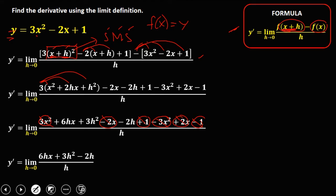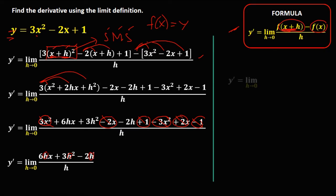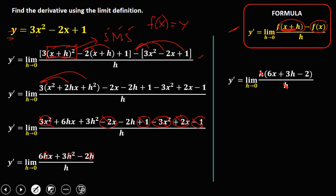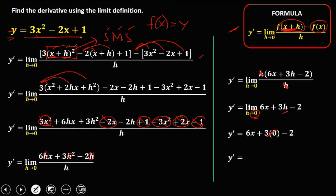In the numerator, h is common in every term, so factor out h: we get h times (6x plus 3h minus 2) over h. Cancel h, so y prime equals the limit as h approaches 0 of (6x plus 3h minus 2). Substitute 0 for h: y prime equals 6x plus 3 times 0 minus 2. Since 3 times 0 is 0, the derivative is y prime equals 6x minus 2.